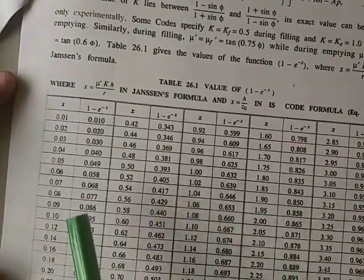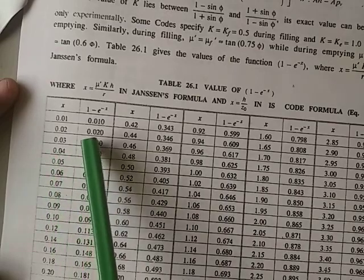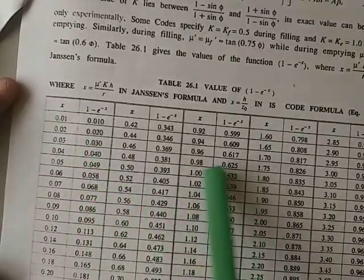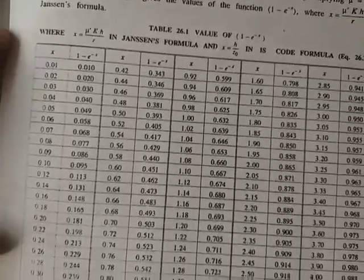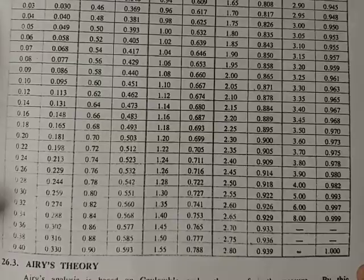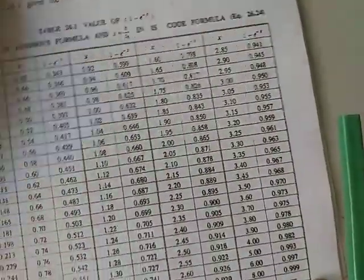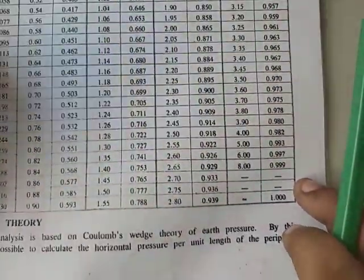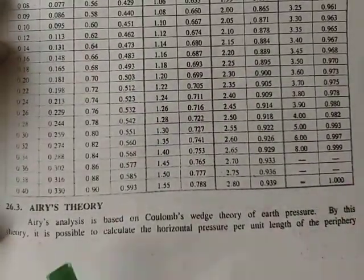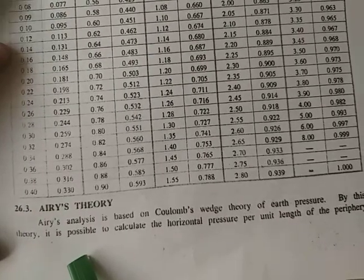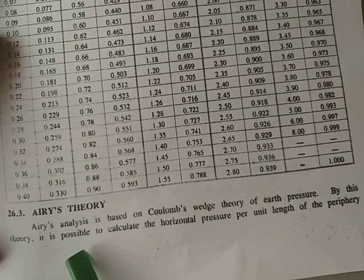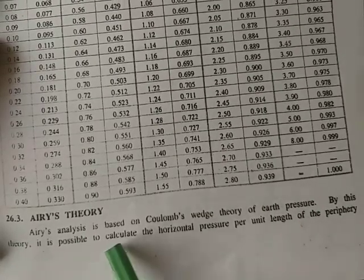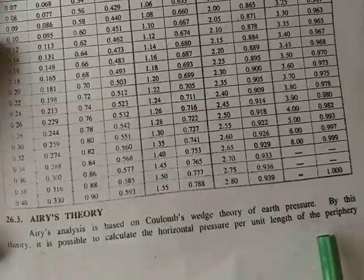Jensen's theory can be applied to design silos. Similarly, Aries' theory can also design silos and is defined for both conditions — it can design bunkers as well as silos. Aries' theory is based on Coulomb's wedge theory of earth pressure, allowing calculation of horizontal pressure per unit length of the periphery.